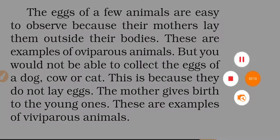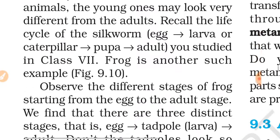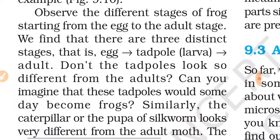The mother gives birth to young ones — these are viviparous animals. The new individuals born from eggs continue to grow until they become adults. In some animals, the young ones may look very different from the adults. Recall the life cycle of the silkworm from Class 7: egg, larva or caterpillar, then pupa, then adult. Observe the different stages of the frog also, starting from the egg to adult stage — there are three distinct stages: egg, tadpole larva, and adult.